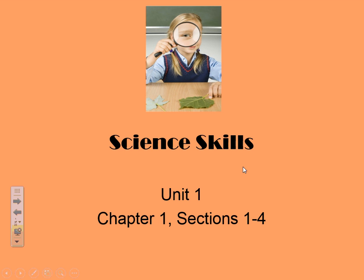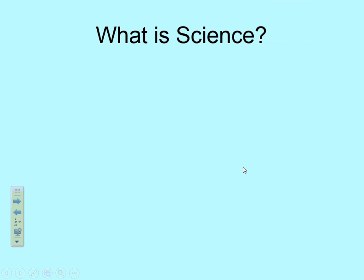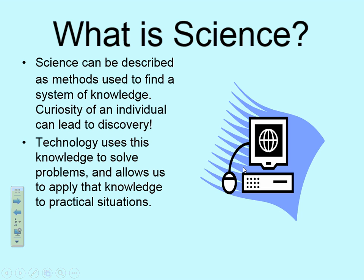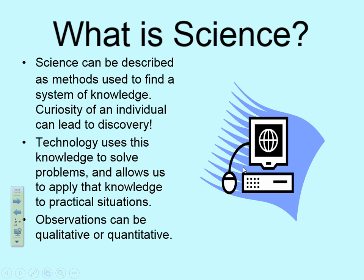We are starting the year, we are talking about science. You are in 9th grade physical science. What is physical science, and more importantly, what is just science? Science is observing phenomena that happen around you. Why are things happening? Why do bees sting you? Why do plants grow? Why does the earth go around the sun? Curiosity — we're trying to figure out why things work.